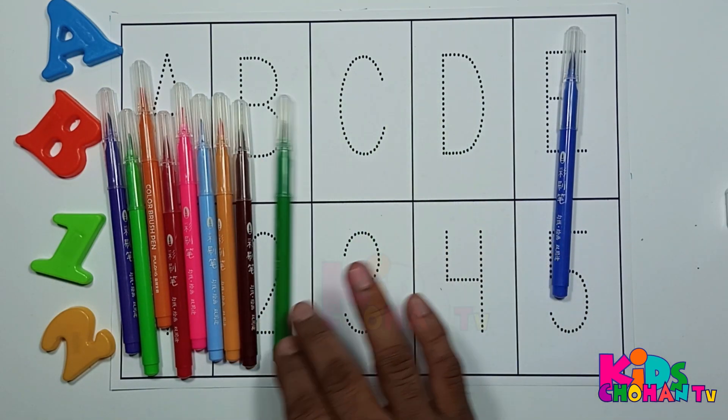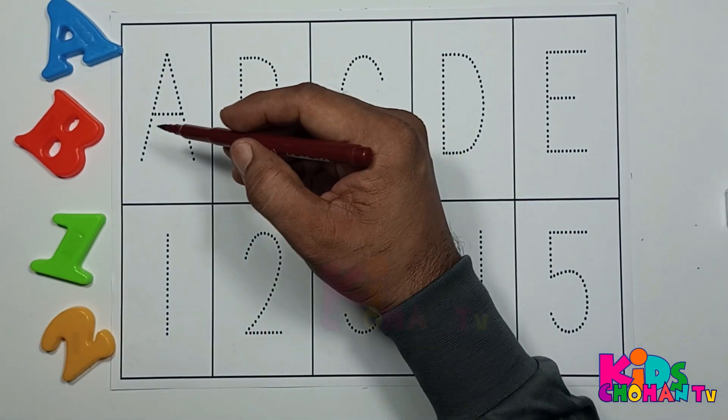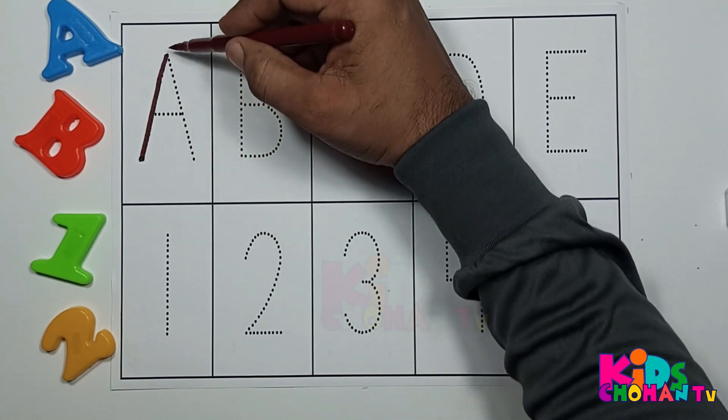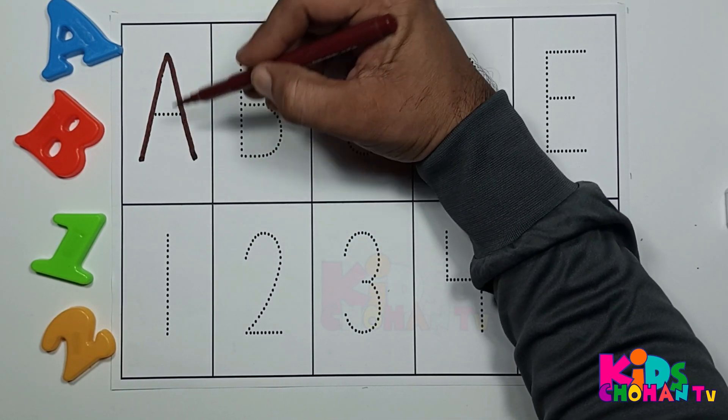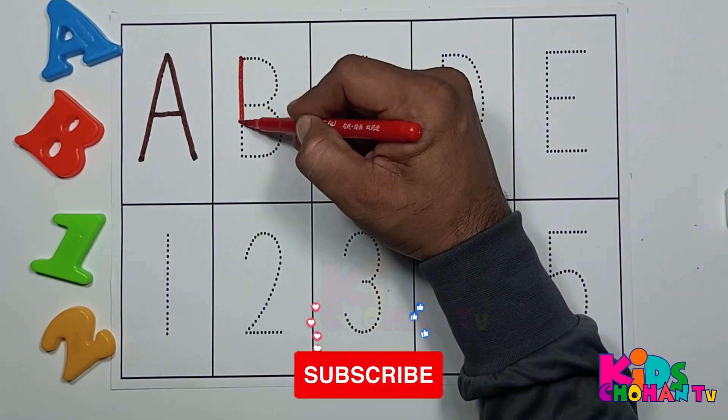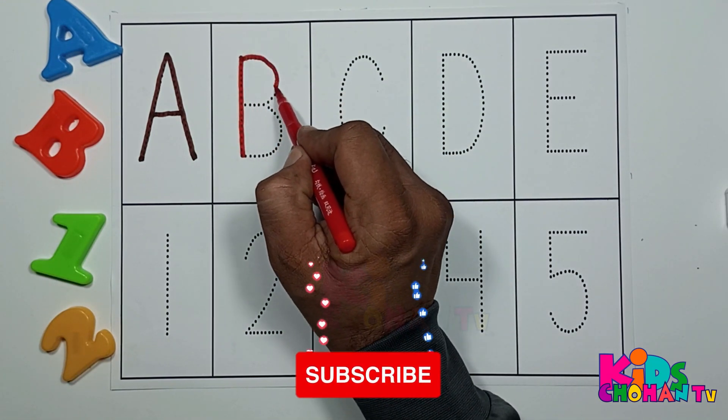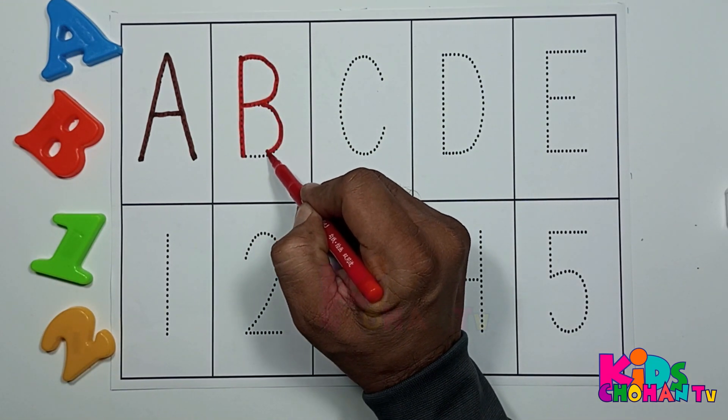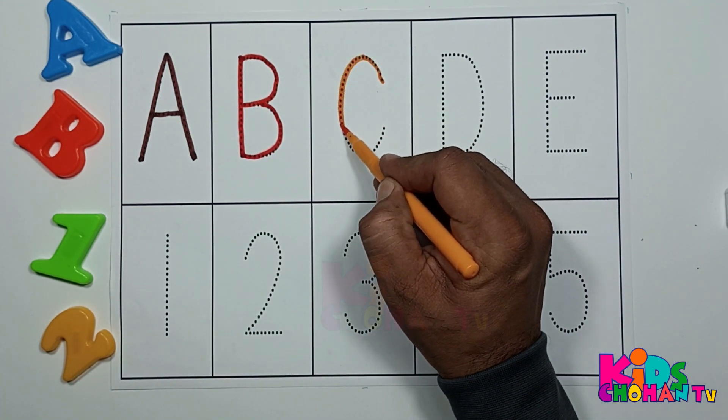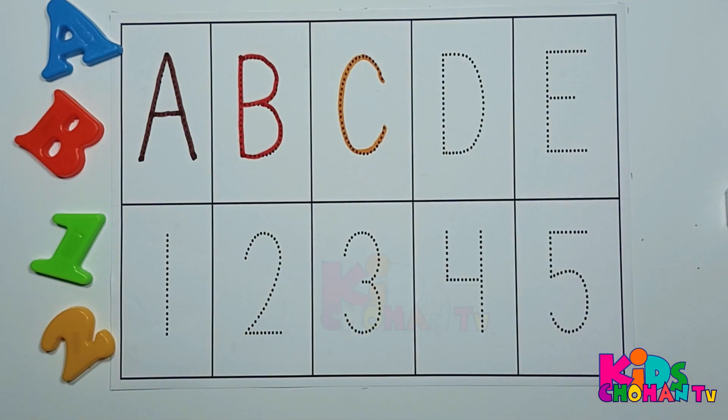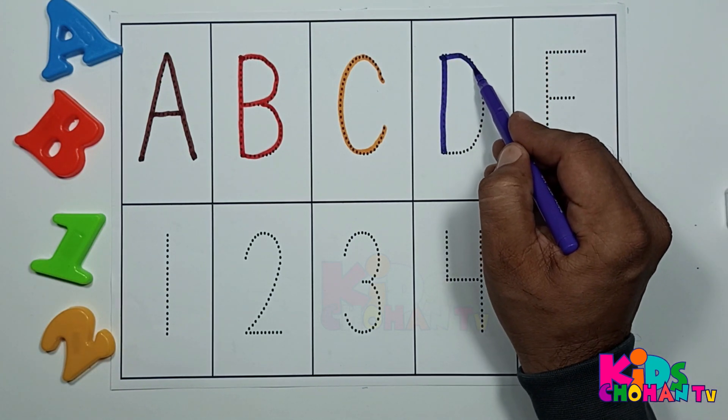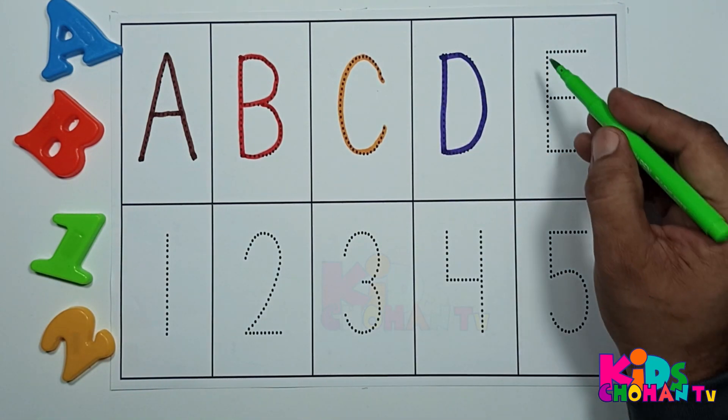Now kids, press capital letter A. A for apple. Press capital letter B. B for butterfly. Press capital letter C. C for cat. Press capital letter D.